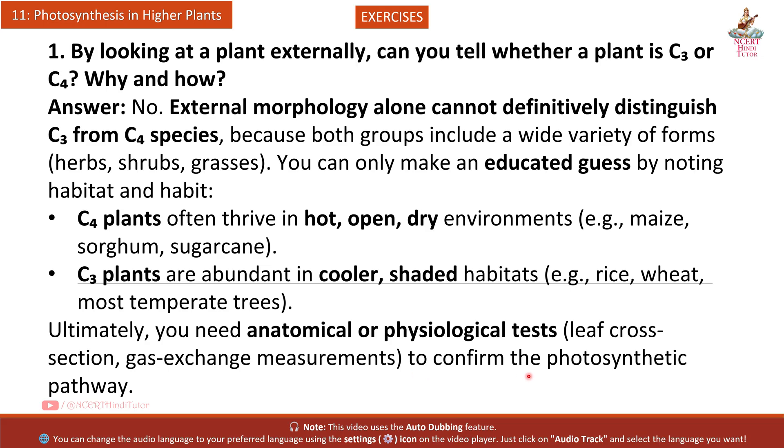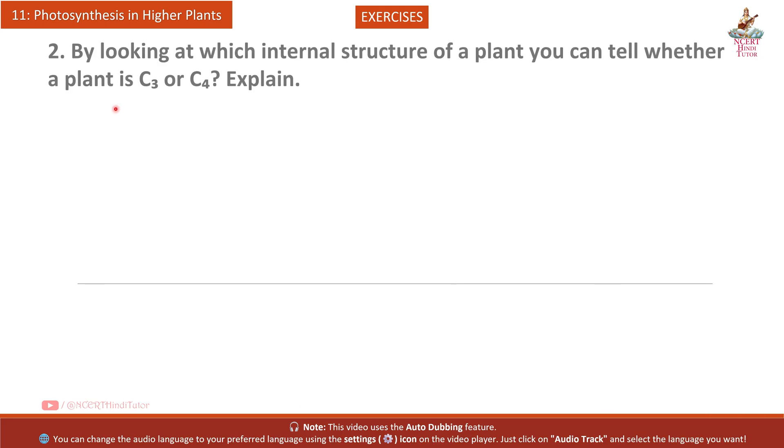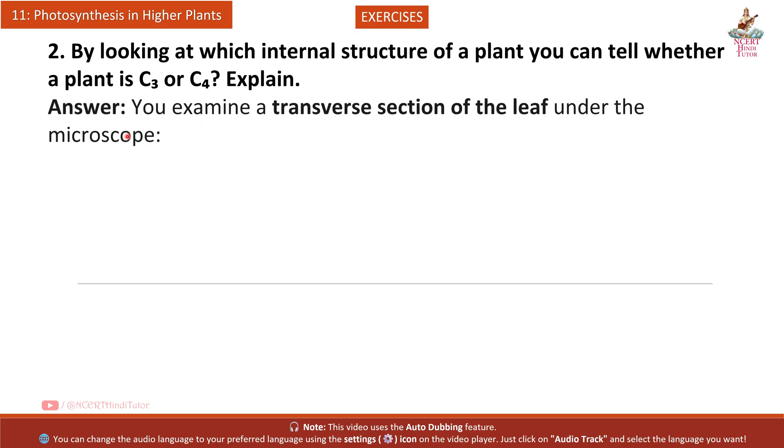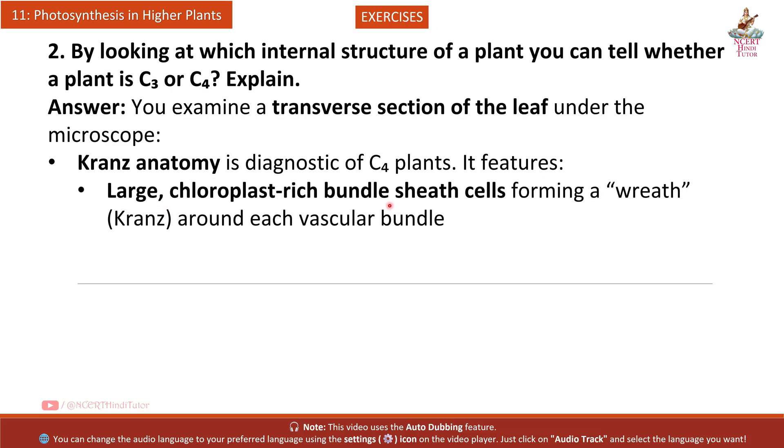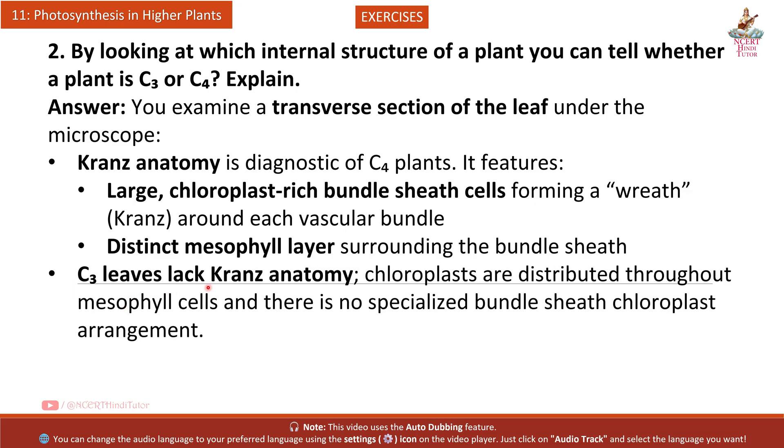Question 2: By looking at which internal structure of a plant can you tell whether a plant is C3 or C4? Answer: You examine a transverse section of the leaf under the microscope. Kranz anatomy is diagnostic of C4 plants. It features large chloroplast-rich bundle sheath cells forming a wreath around each vascular bundle, with a distinct mesophyll layer surrounding the bundle sheath.